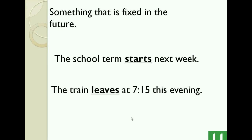We can also use the present simple to talk about something that is fixed in the future, like your birth date. So when we say the school term starts next week — something fixed like calendar dates, events, something that has a start and end date. The train leaves at 7:15 this evening, for particular days.